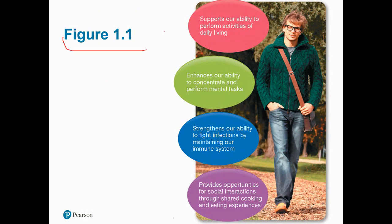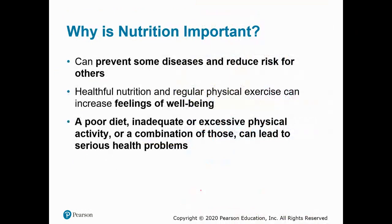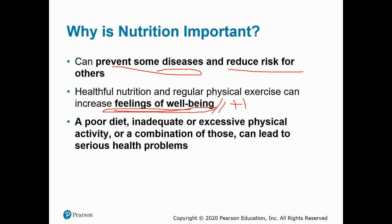Figure 1.1 from your textbook shows how nutrition supports wellness. It supports our ability to perform basic tasks of daily living — like walking to and from school or work, doing schoolwork or your job. Nutrition supports our ability to concentrate and perform mental tasks, supports our immune system, and also provides opportunities for social interactions through shared cooking and eating experiences. Nutrition is important because it can prevent disease, reduce the risk for certain diseases, and it increases that sense of wellness or well-being — synonymous with thriving.